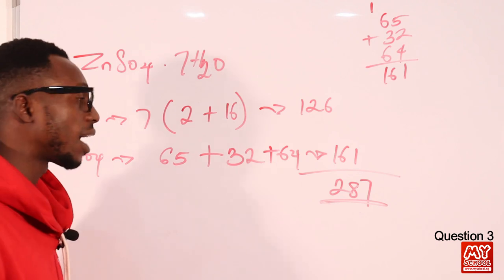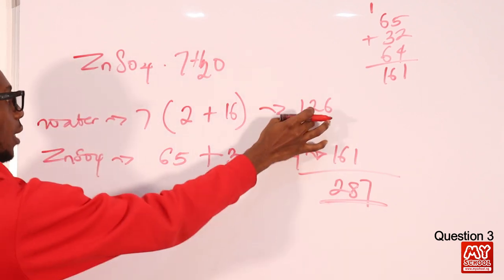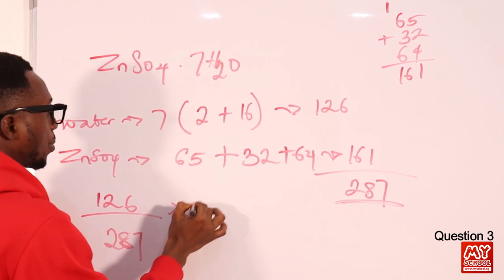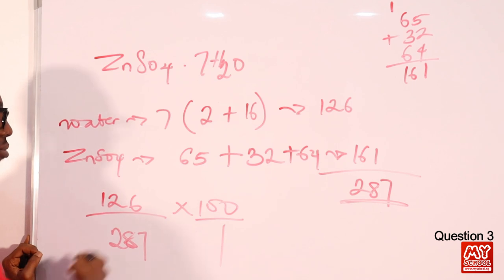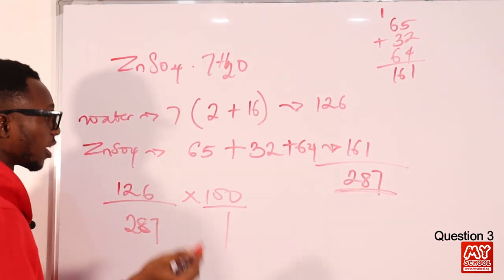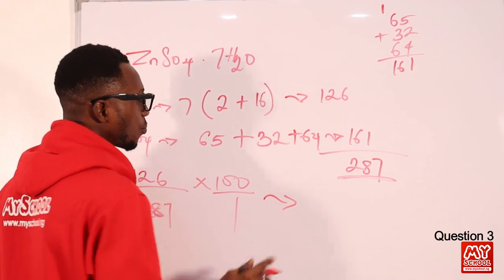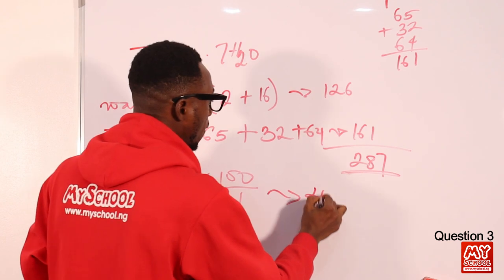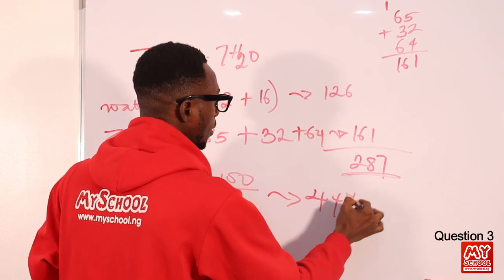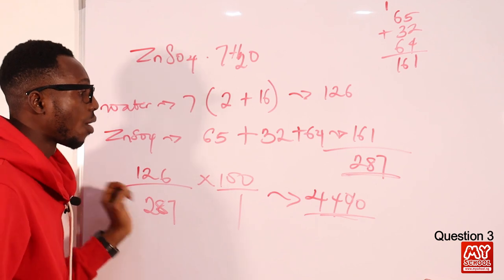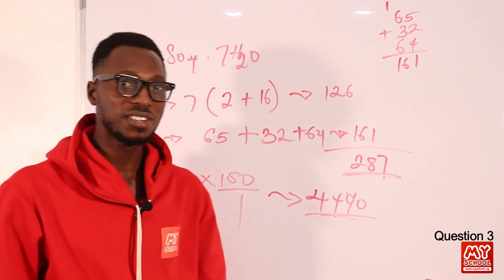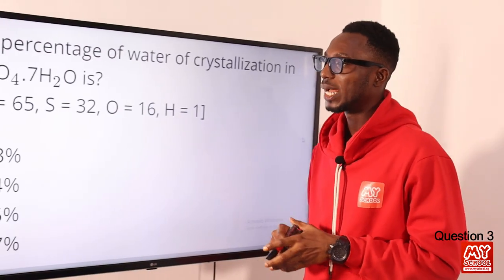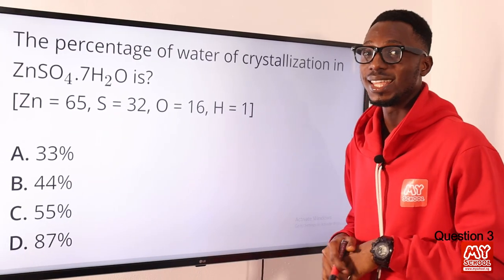To find the percentage of water of crystallization: (126 / 287) × 100% ≈ 43.9%, which rounds to approximately 44%. So 44% is the water of crystallization. Going back to the screen to confirm — we have option B, so option B is the right option.